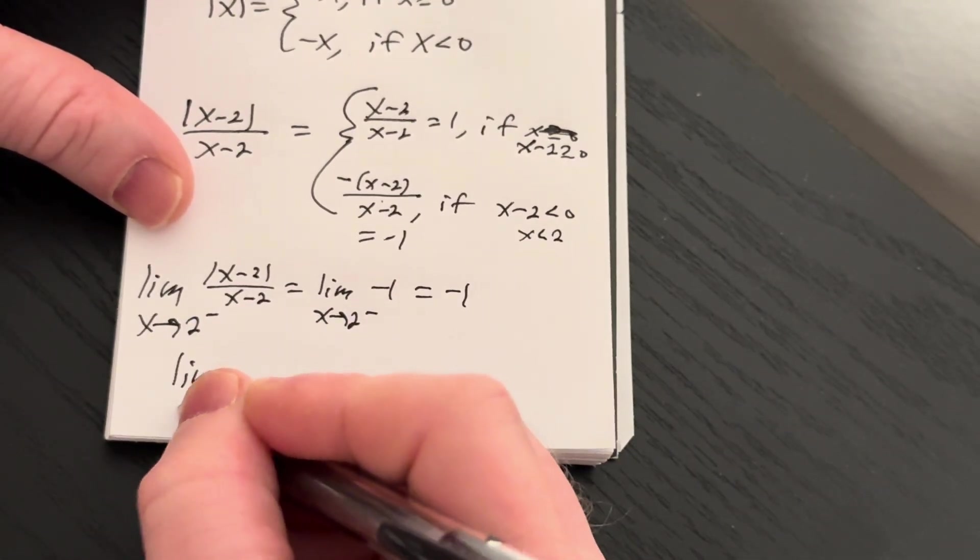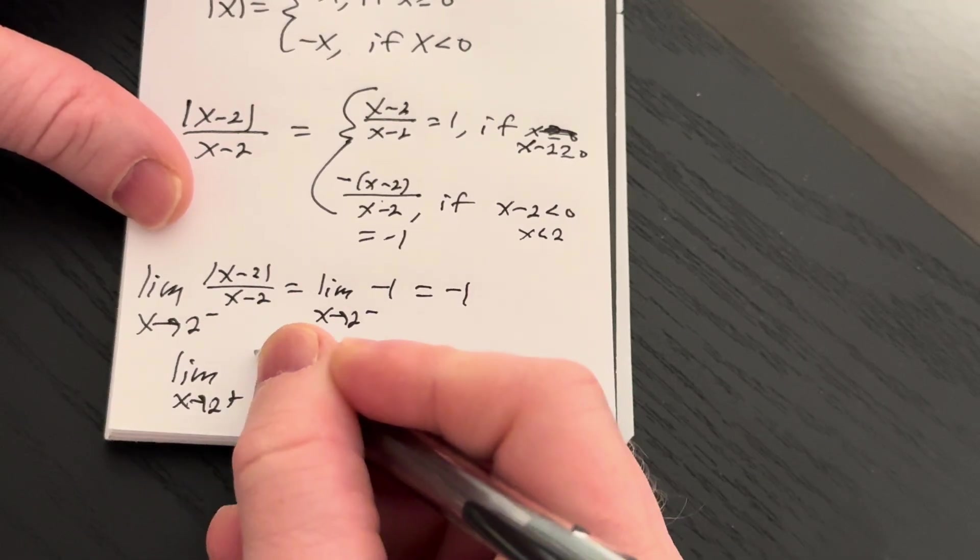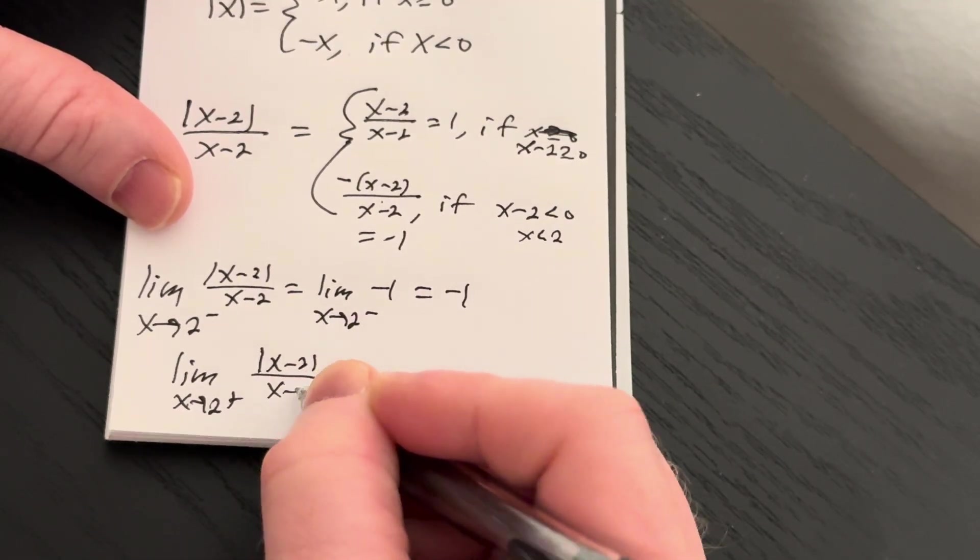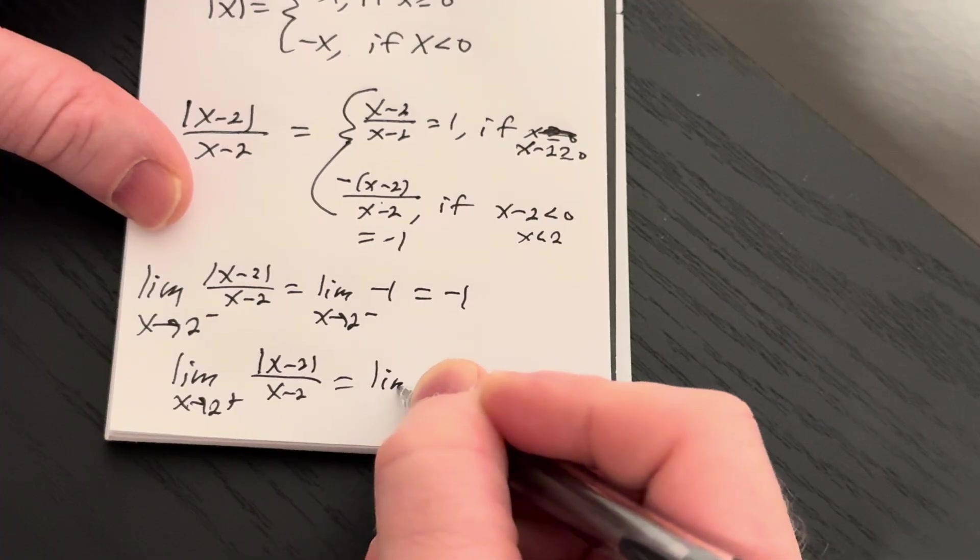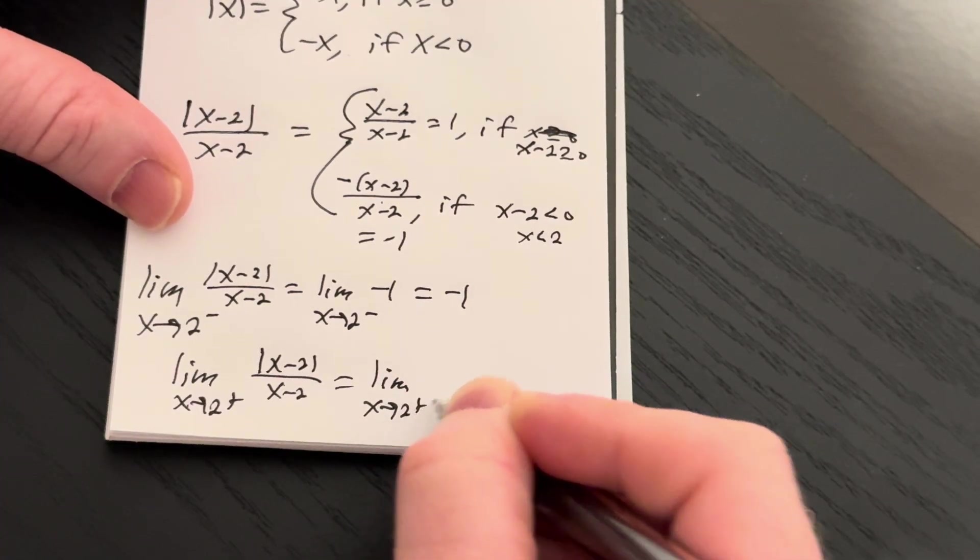And if you approach from the right, the absolute value of x minus 2 over x minus 2 is equal to the limit as x approaches 2 from the right. And this is just 1, so we get 1.